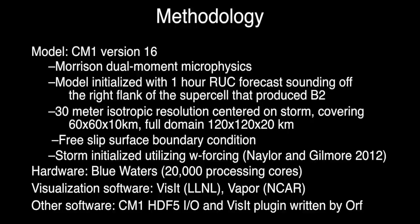We're using CM1 version 16 with the same Morrison microphysics as was in the previous talk. We used a one-hour RUC forecast off the right flank of the storm that produced B2 to initialize the model. We're using 30-meter isotropic resolution, free slip, using W-forcing to get the storm going. This is run on Blue Waters, a supercomputer with 20,000 processing cores.